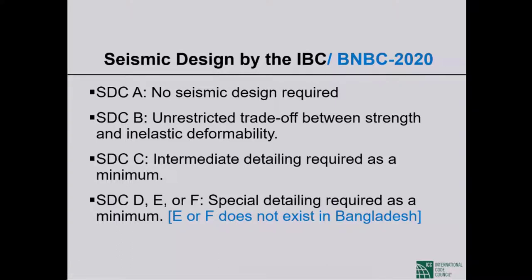Seismic design category B is the only category where unrestricted trade-off is allowed. In SDC B, you need only an ordinary moment frame of concrete with an R value of 3; if you want a lower strength level, you can use an intermediate moment frame with R=5; or a special moment frame with R=8. All those choices are allowed.